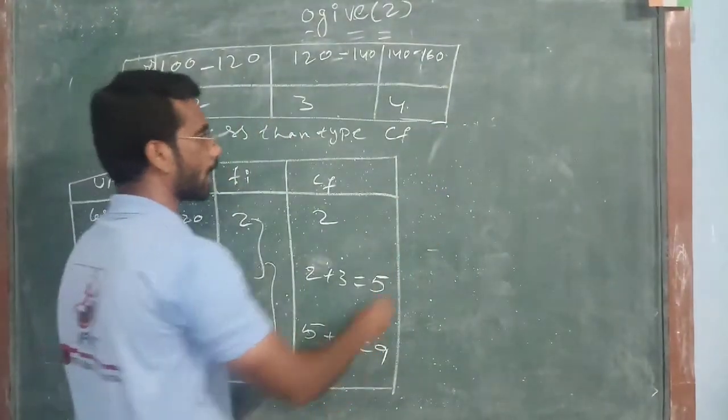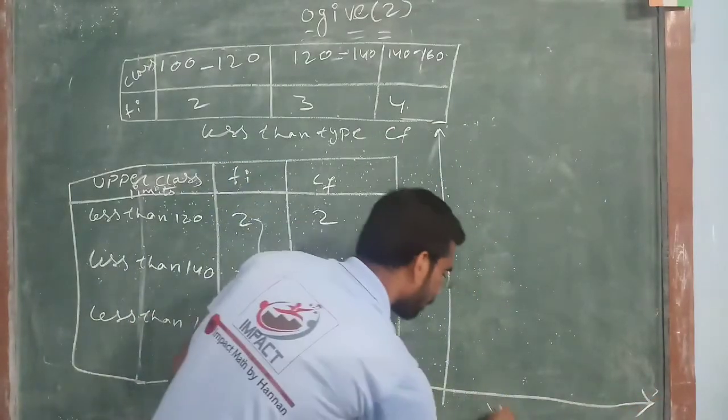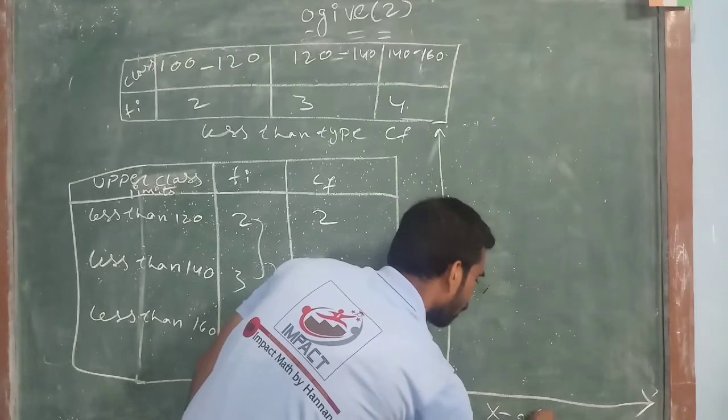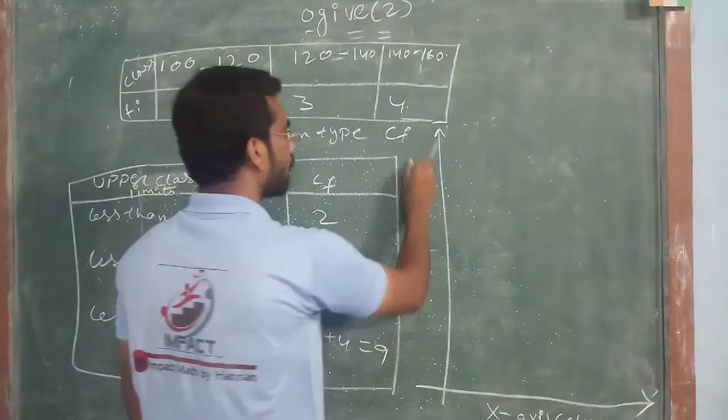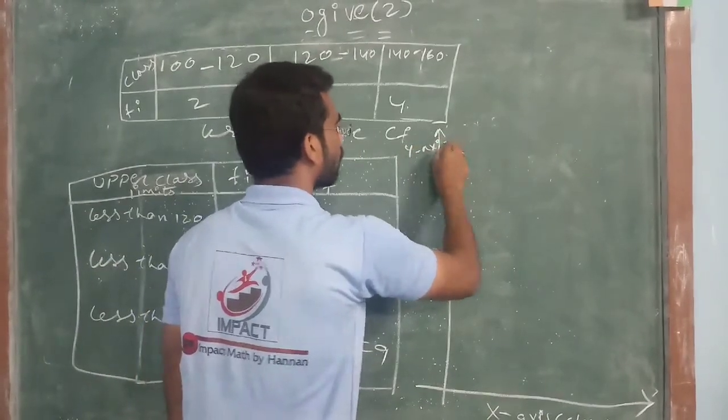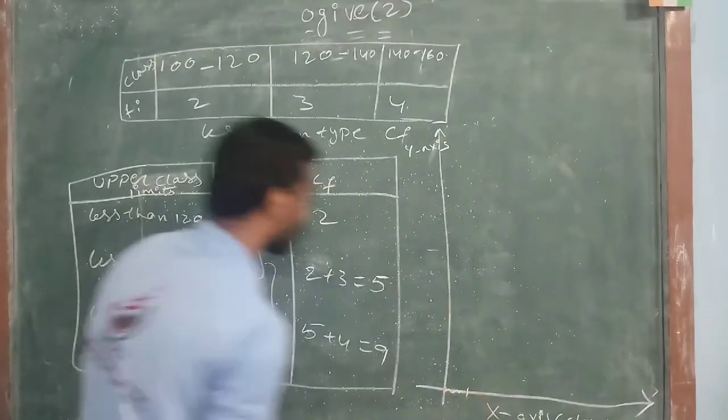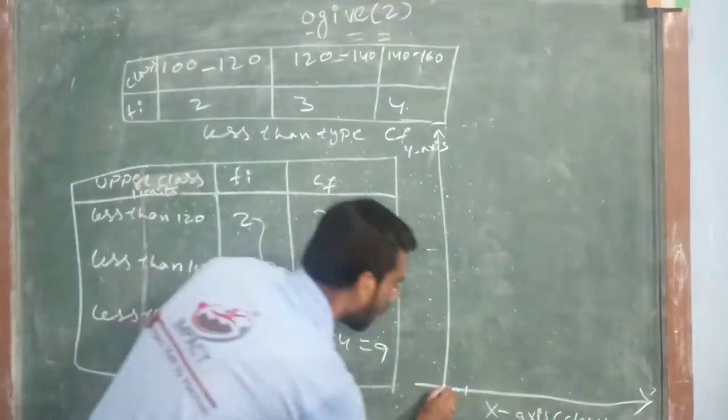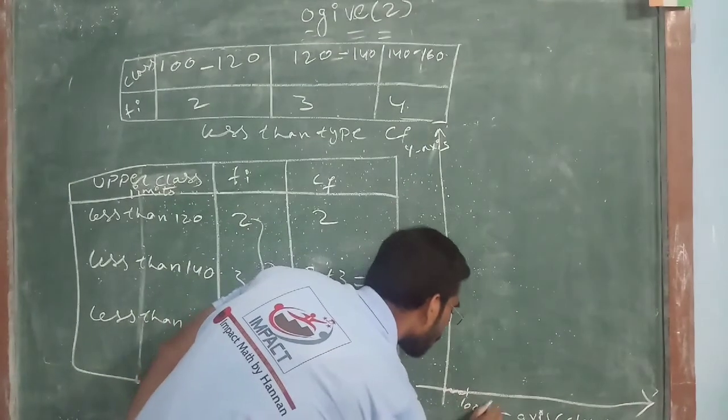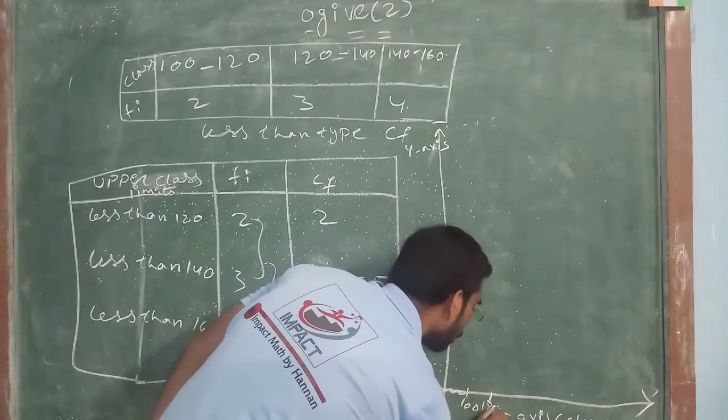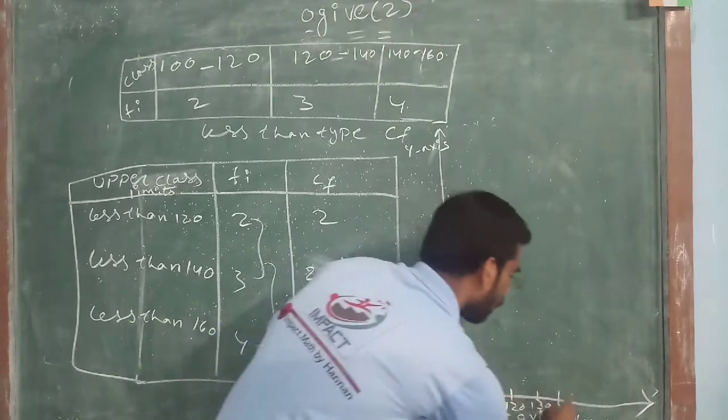Now, we should place this into the graph. How to place this one? This will be the x axis. In x axis, always it will be the class. It will be the class and this will be the y axis. In this, you should write cumulative frequency. I left some place here and starting with 100, 110, 120, 130, 140, 150 and 160.